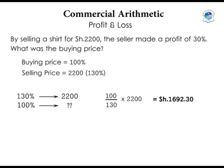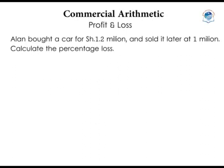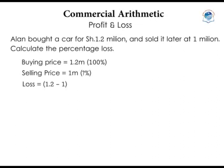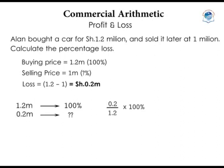Another example: Alan bought a car for 1,200,000 shillings and sold it for 1,000,000 shillings. Calculate the percentage loss. The buying price = 1,200,000 = 100%. The loss = 1,200,000 − 1,000,000 = 200,000 shillings. So the percentage loss = (200,000 / 1,200,000) × 100% = 16.67%.